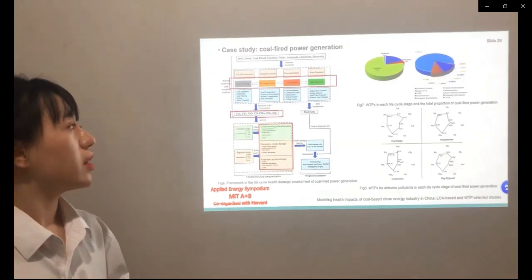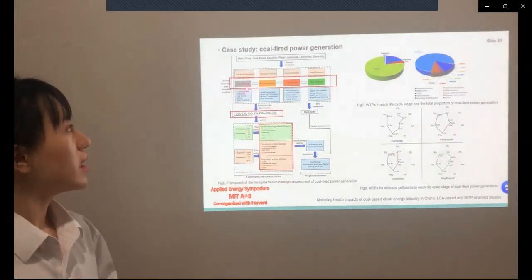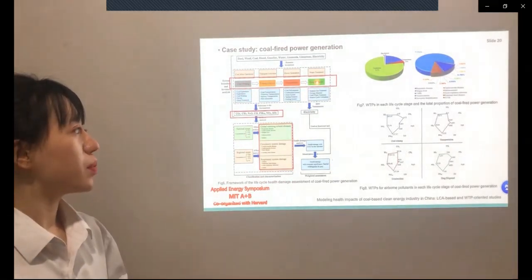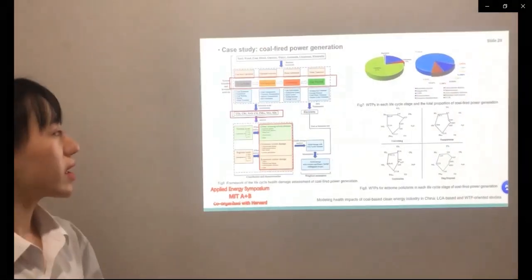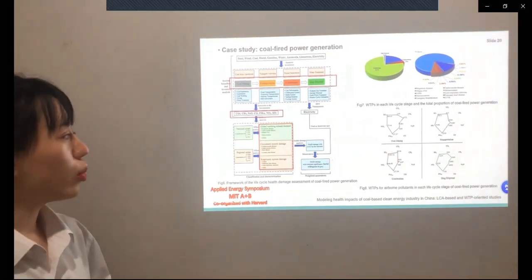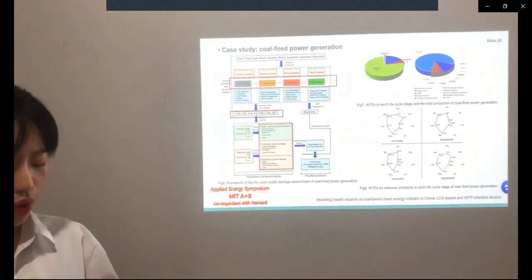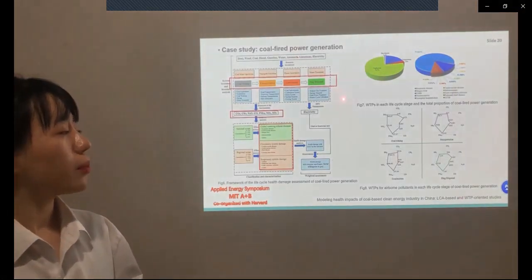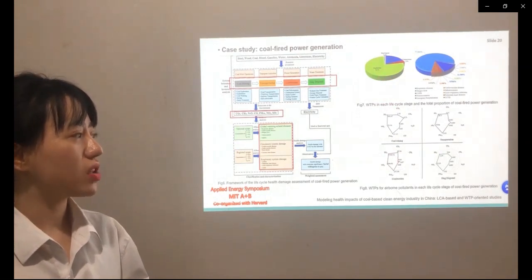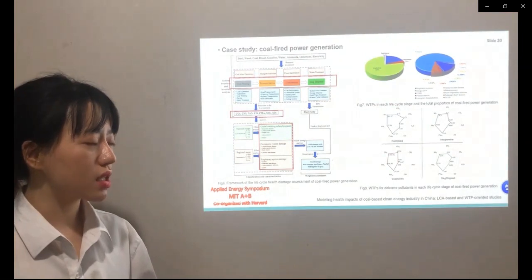The second study is coal-fired power generation. As shown in this framework picture, we divided coal power generation into four steps: coal mining, transportation, combustion, and ash disposal. In this research, we discussed seven kinds of environmental pollution and divided the terminal diseases into three types: global warming-related diseases and respiratory system damage. After applying our models, we found that the most serious stage and terminal diseases were coal combustion and respiratory diseases. Among seven kinds of airborne pollutants, sulfur dioxide has the greatest health values.